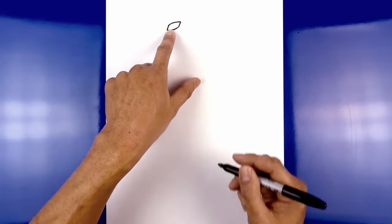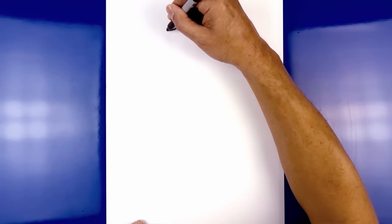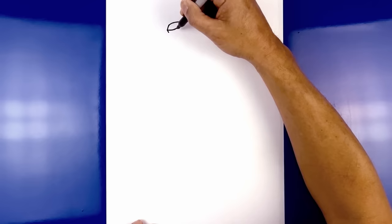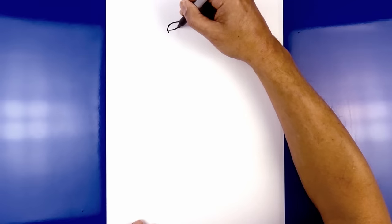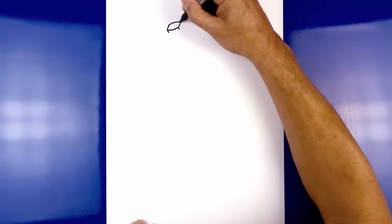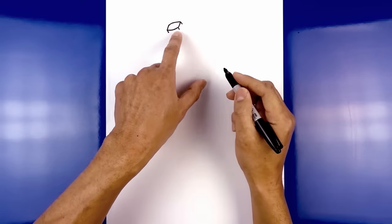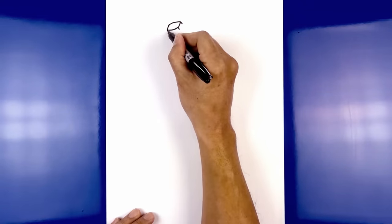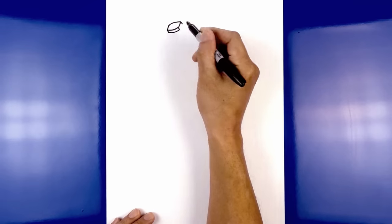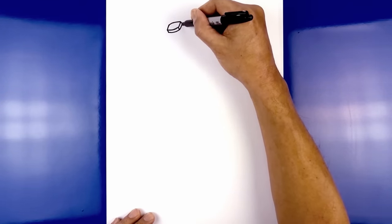Now we want to get some thickness to the top stem of the banana. Starting from the left corner here, we're going to draw a short angled line coming down. Go to the right side, do that same angled line and do the same with the outside. Now we're just going to connect these three points with a curve coming down and up. Then we'll connect these two points with another curve.